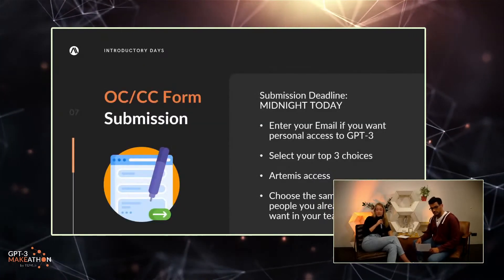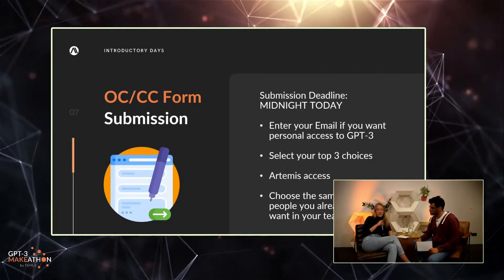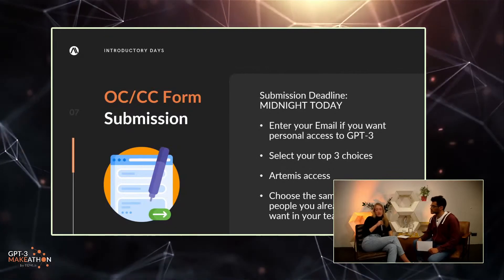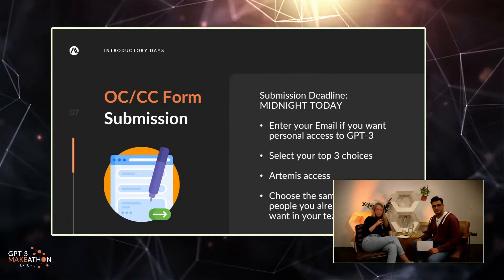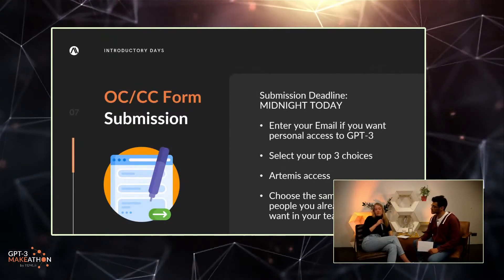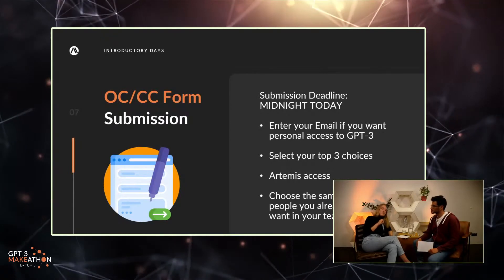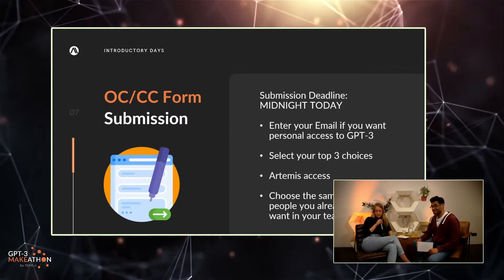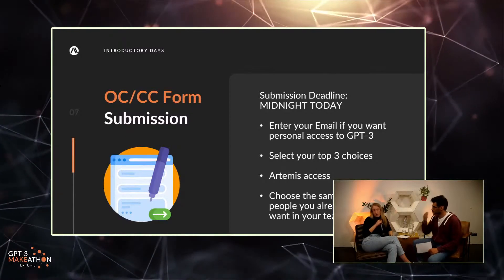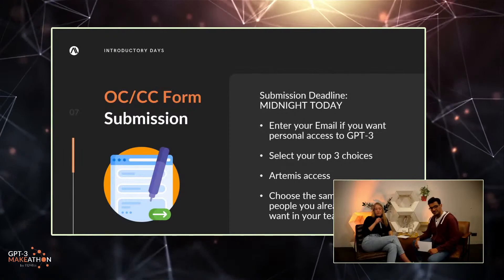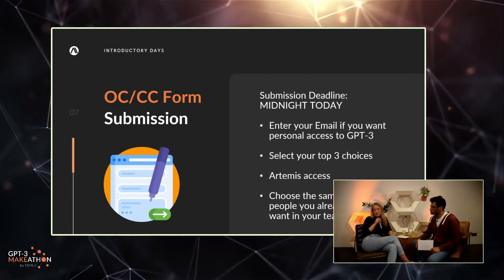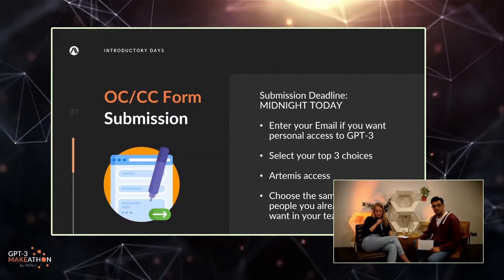The most important thing for today is the submission of the OC/CC form — the deadline is midnight tonight, so please don't forget. You need to enter your email if you want personal access to GPT-3, which we very much recommend. You'll also get your Artemis access, which is straightforward if you have a TUM ID; if not, there are a few steps to follow. And most importantly, select your top three choices — either the company you want to work with or the own challenge path. If you already have teammates, make sure you select exactly the same options so we can ensure you're in the same socializing groups.